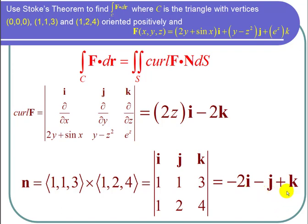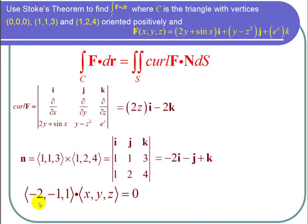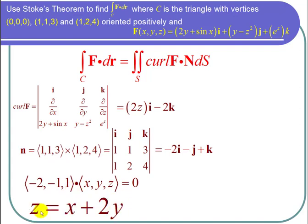So the normal vector dotted with the displacement vector should always be 0. And I can let the displacement vector go from (0,0,0) to (x,y,z) and say that (-2,-1,1) dotted with (x,y,z) is equal to 0. And when I dot those, I get negative 2x minus y plus z equals 0. Or z is x plus 2y.